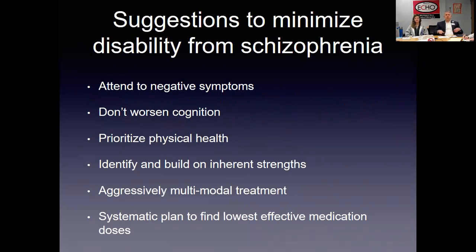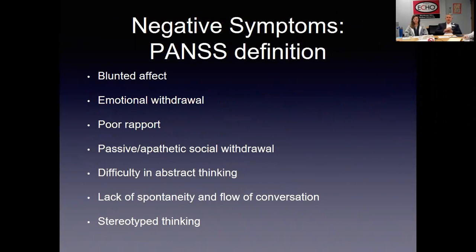To summarize the take-home points: pay attention to the negative symptoms, try not to worsen cognition, prioritize physical health, identify inherent strengths, be multimodal in treatment — in other words, don't focus solely on pharmacotherapy — and develop plans to refine medications to the most effective.